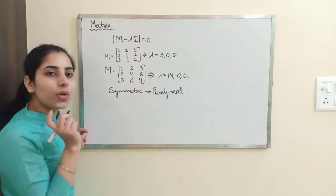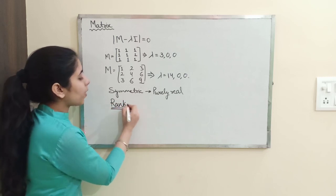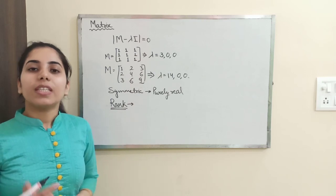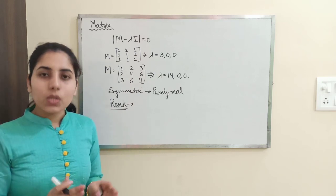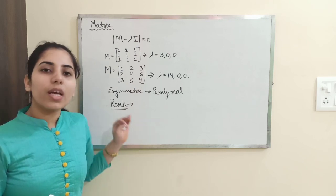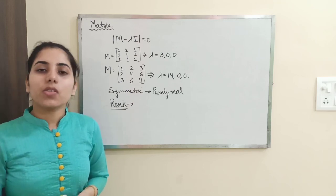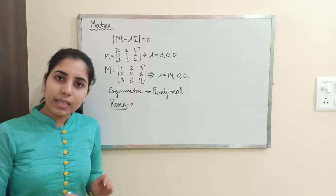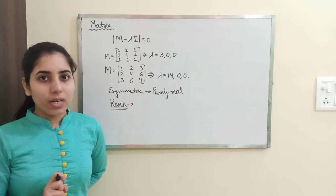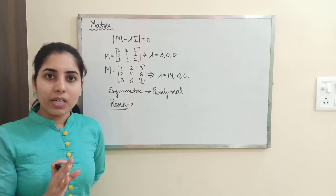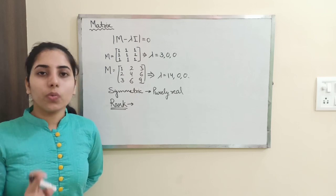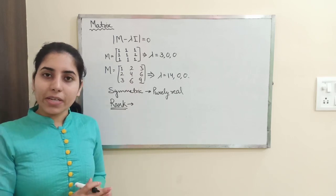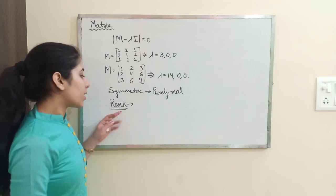Next important topic is the rank of a matrix. The rank is the order of the largest square sub-matrix whose determinant is non-zero. If a 3×3 matrix has a non-zero determinant, its rank is 3. If the determinant is zero, check the 2×2 sub-matrices — if a 2×2 sub-matrix has a non-zero determinant, the rank is 2. That's how you find the rank.